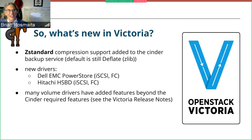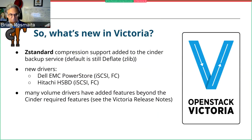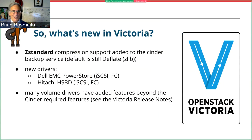We've also added Z-Standard algorithm compression support to the Cinder backup service. The default is still deflate (Zlib), but now we also have the popular modern Z-Standard technique available with the backup service. Additionally, a couple of new drivers were added: Dell added the PowerStore driver for iSCSI and Fiber Channel, and Hitachi added the HSBD driver for iSCSI and Fiber Channel. Many volume drivers also added features beyond the Cinder required features — check the Victoria release notes for the full list.